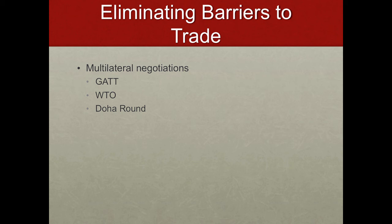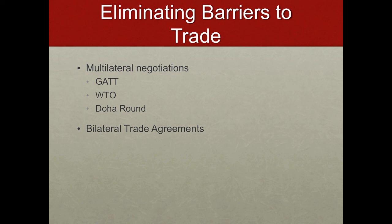Currently there's a round of negotiations called the Doha Round that has not been concluded successfully. The problem is that it's trying to address barriers in the agricultural area, which is one of the toughest places to get concessions. There are also bilateral trade agreements — when two countries negotiate a separate agreement with each other, most typically a free trade agreement eliminating all barriers between them. One could also add unilateral trade agreements, where the United States, for example, has reduced barriers without requiring any other country to agree to the same thing.